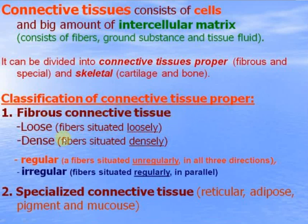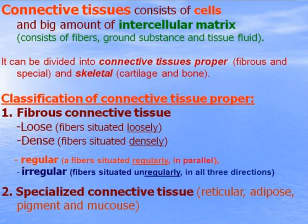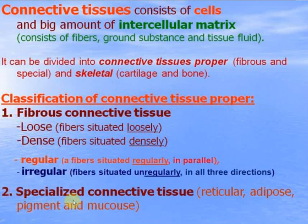Classification of connective tissue proper. They can be divided into two groups: fibrose connective tissue — loose, where fibers are situated loosely, and dense, where fibers are situated densely. Dense connective tissue may be regular, if fibers are situated in parallel, and irregular, when fibers go in all three directions. The second type is specialized connective tissue: reticular, adipose, pigment, and mucous.